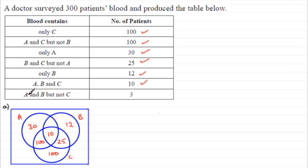And then finally, A and B but not C. A and B is that one but not C, so it's just this region here, and that's three.